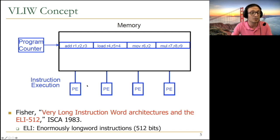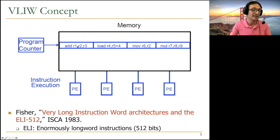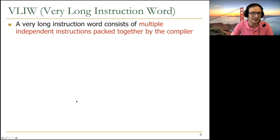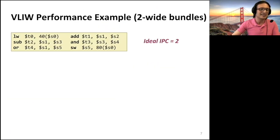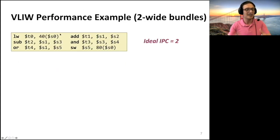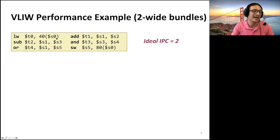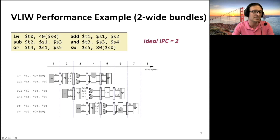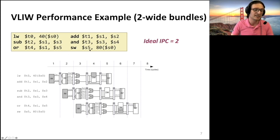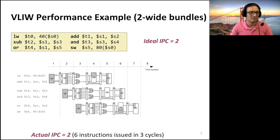The compiler knows the microarchitecture and ensures no routing is needed — the hardware doesn't route instructions to function units because the compiler ensures alignment. Hardware stays simple; compiler is complex. In this example of VLIW execution with two-wide bundles, the ideal IPC should be two, and we achieve that ideal IPC because the compiler has packed independent instructions into each slot with no dependency-caused stalls.